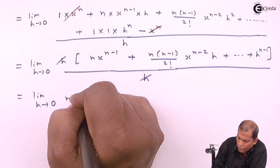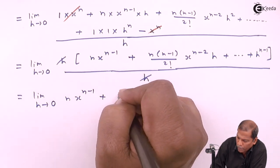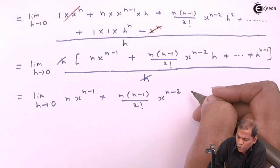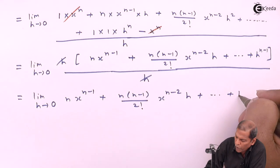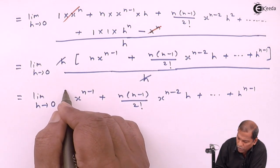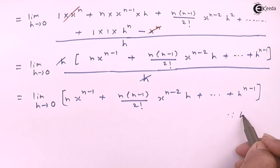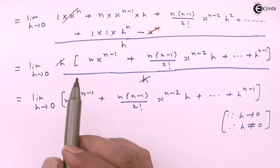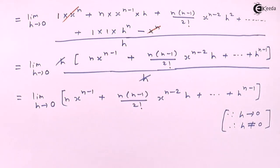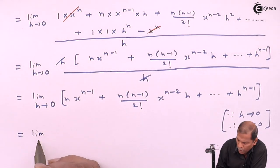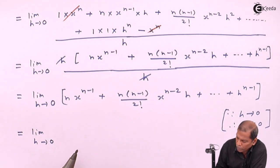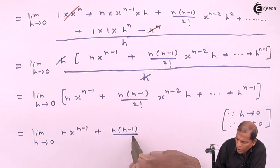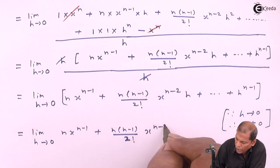So that equals limit h tends to zero. We cancel h from numerator and denominator, and are left with n·xⁿ⁻¹ + n(n−1)/2! · xⁿ⁻²·h + ... + hⁿ⁻¹. The reason we can cancel h is that since h tends to zero, h is not equal to zero.